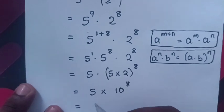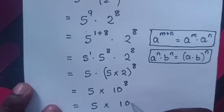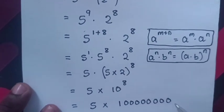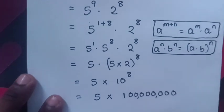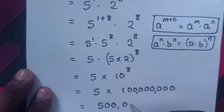Then, here it will be 5 times 10^8 which is 100 million. So this will be equal to 5 times 100 million which is 500 million.